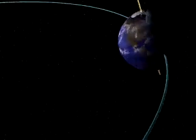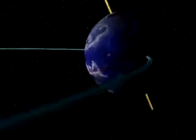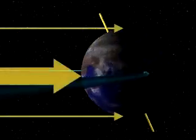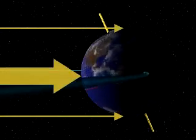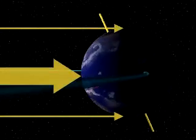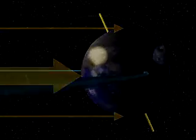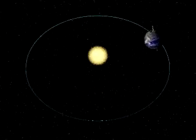Zooming in on our planet, we see that sunlight strikes the Northern Hemisphere more directly, making the day length there longer. This is the longest day in the Northern Hemisphere's summer.